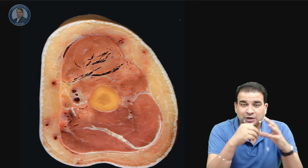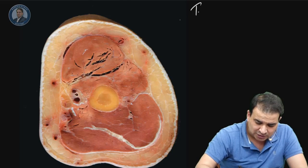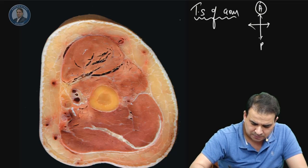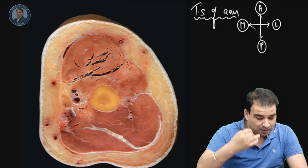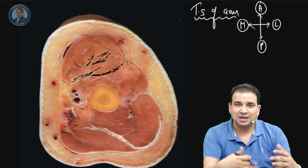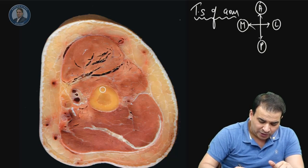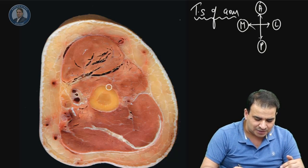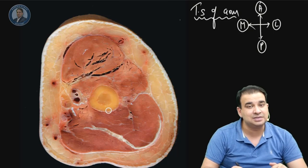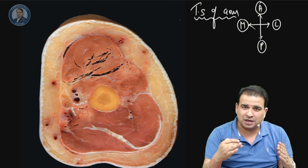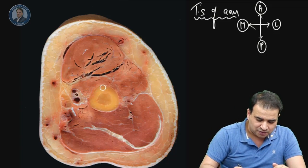This is a transverse section of the arm. This is the anterior, posterior, lateral, and medial orientation. To prove it: look at the humerus — the posterior surface is more flattened and the anterior part is more tapering, giving a triangular appearance. This tells us it is a section from the lower part of the arm.